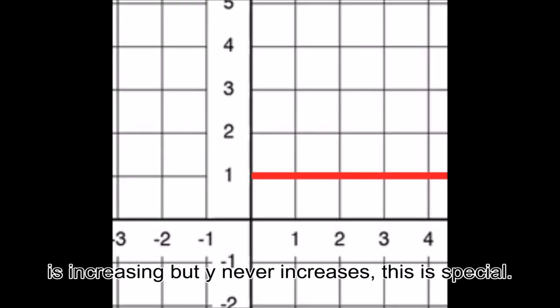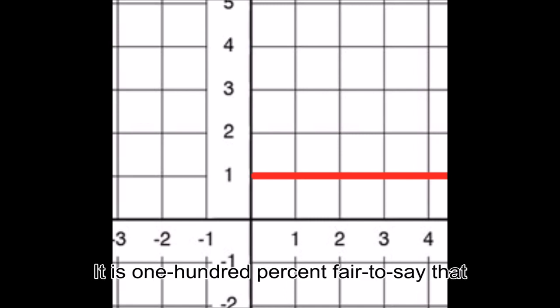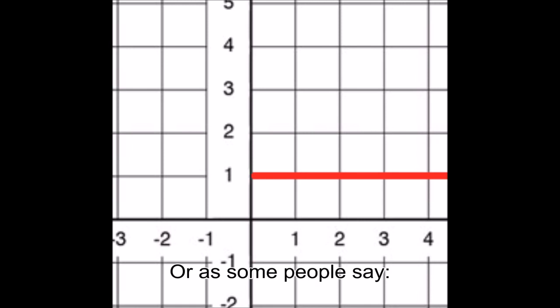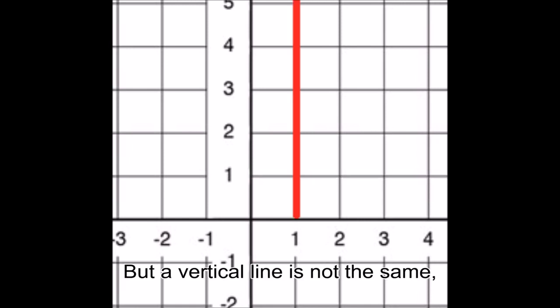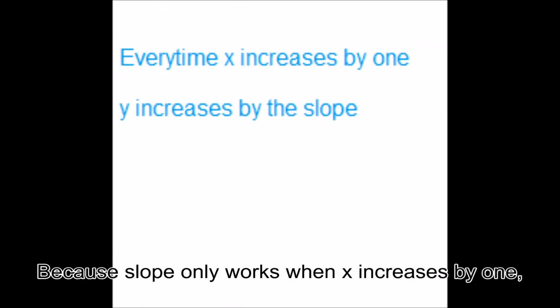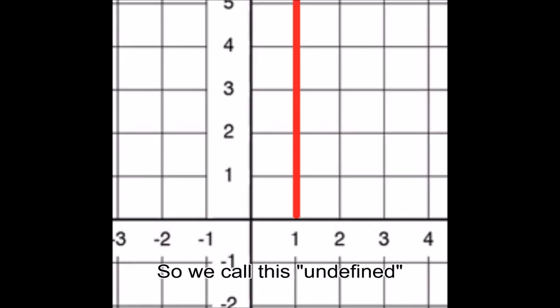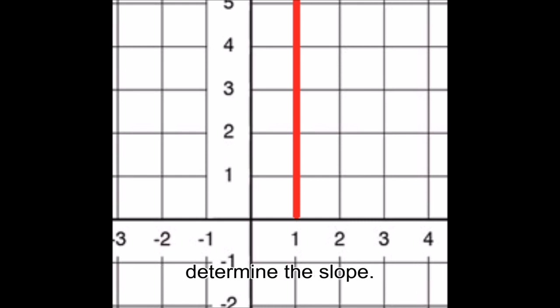Also I should mention that when x is increasing but y never increases, this is special. It is 100% fair to say that whenever x increases by 1, y is increasing by 0. So this is called a slope of 0, or as some people say, no slope. But a vertical line is not the same. Because slope only works when x increases by 1, if x is never increasing by 1, we cannot find the slope. So we call this undefined, or indeterminate, because you can never determine the slope.